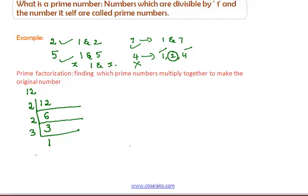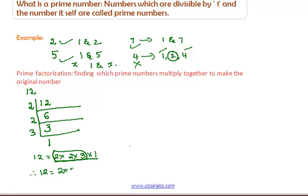Now, 12 can be written as the product of these numbers: 2 into 2 into 3 into 1. In the above product, we take only the product of prime numbers. Therefore, the prime factorization of 12 can be written as 2 into 2 into 3. Here, 1 is left out since 1 is not a prime number.